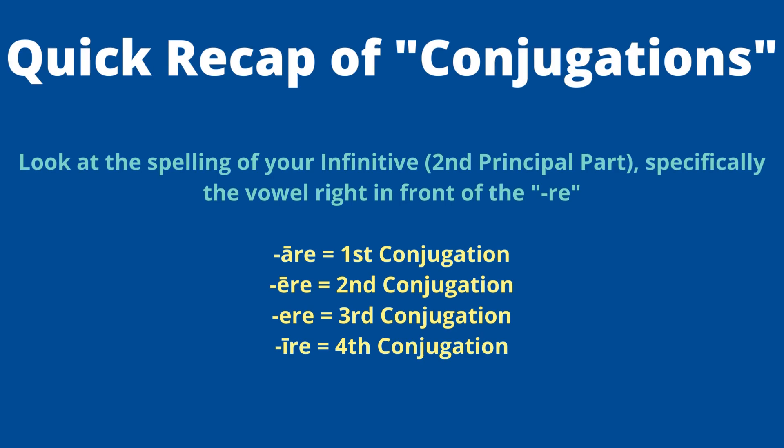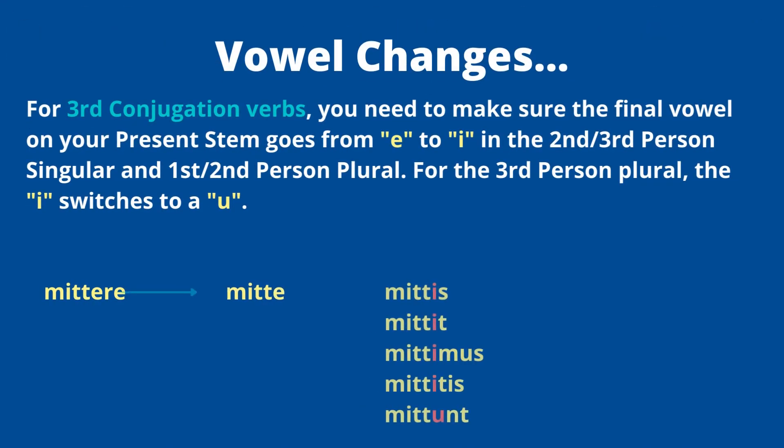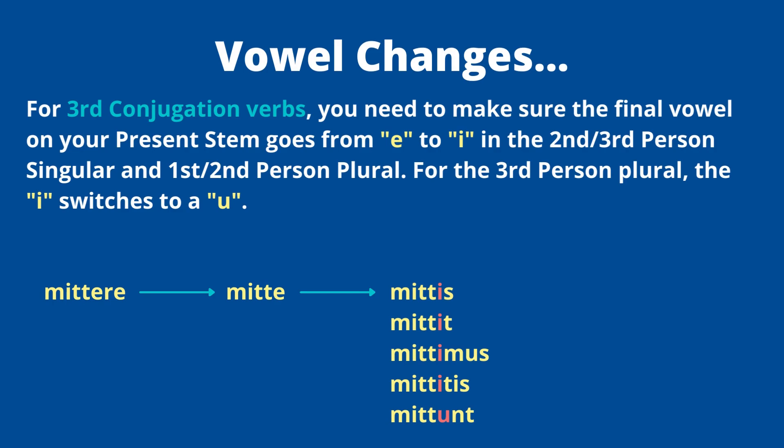It's a little more complicated than that, though, because you have to think about vowel changes — and this is where knowing your verb's conjugation comes into play. The vowel in front of the '-re' in the present infinitive tells you the conjugation: 'a-re' is first, long 'e-re' is second. When you get to a short 'e-re' in the infinitive, that's a third conjugation verb. For third conjugation, the final vowel of the present stem — the 'e' left after dropping '-re' — needs to flip to 'i' for the second person singular, third person singular, first person plural, and second person plural forms.